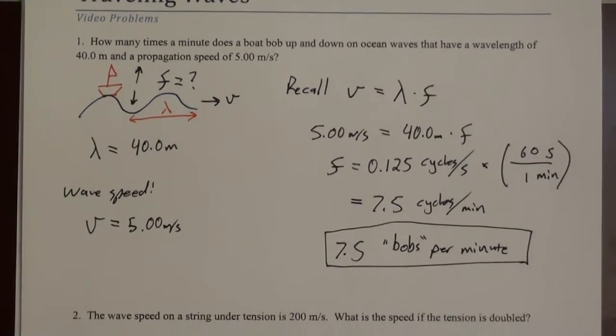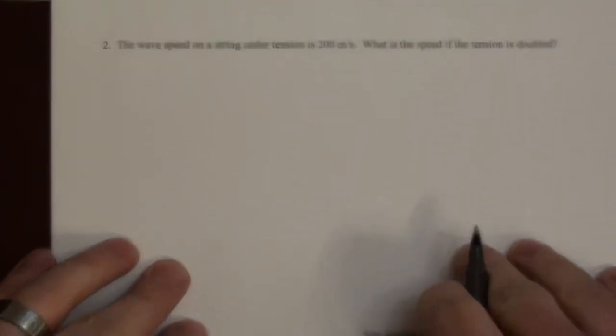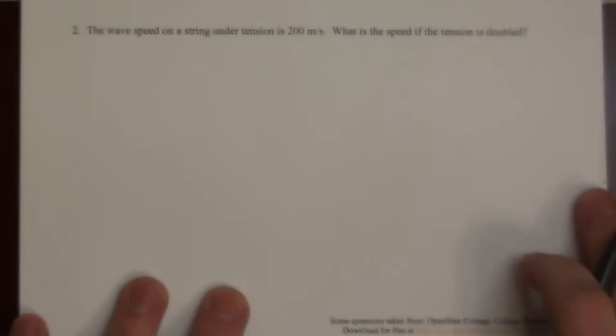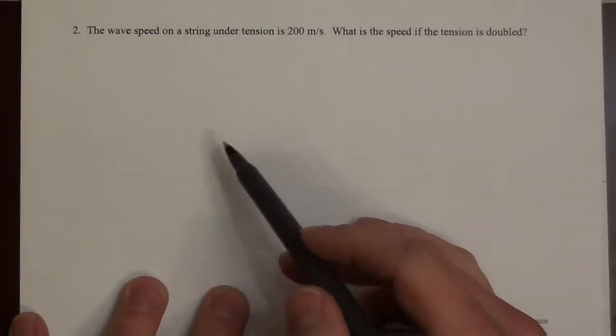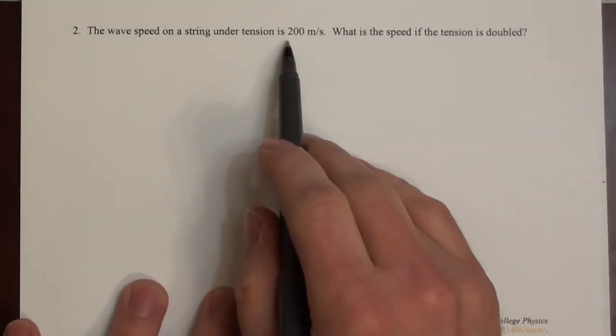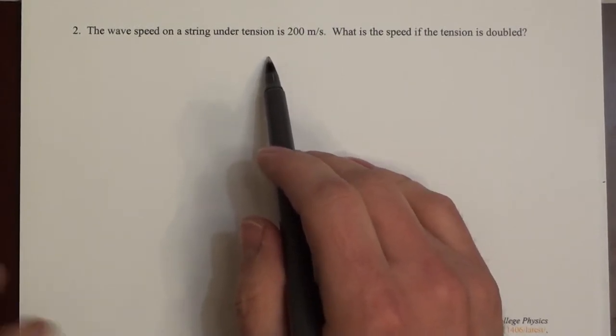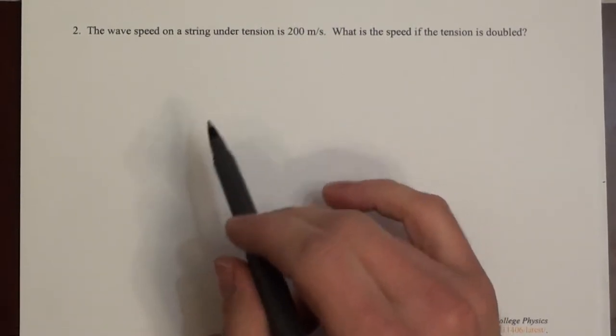The second question here suggests that we have a wave on a string, a string under tension, and the velocity of that wave is 200 meters per second. And we want to know how does the wave speed change if we double the tension.